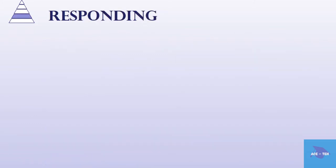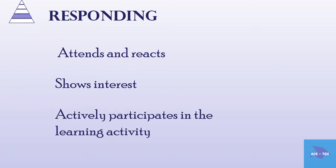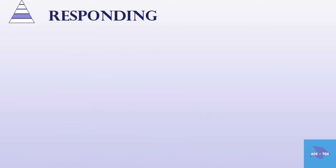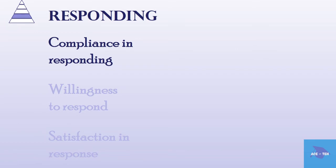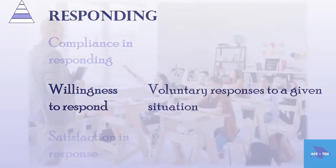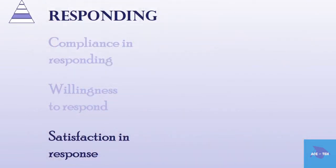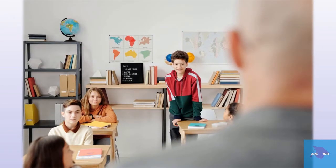The second level is responding. Here the learner responds to events by participating — the learner attends and reacts to a particular phenomenon, shows interest, and actively participates in the learning activity. Learning outcomes in this sub-domain may emphasize compliance in responding, which involves simple obedience; willingness to respond, involving voluntary responses; and satisfaction in response, which corresponds to the satisfaction a learner attains when responding to a learning activity.